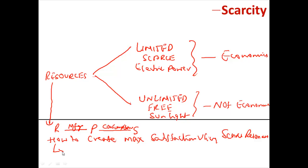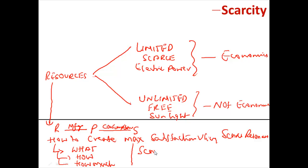Within this main question, you have three sub-questions: what to produce, how to produce, and how much to produce — using scarce resources in order to create maximum satisfaction. So if somebody asks you for the detailed definition of economics, it deals with what to produce, how to produce, and how much to produce, using scarce resources in order to produce maximum satisfaction for the society.